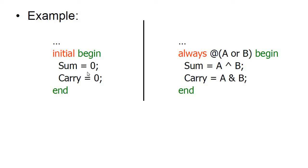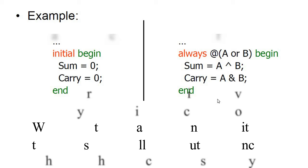As you can see in the example here, inside the initial statement, sum is equal to 0 and carry is equal to 0. This will execute once. Inside the always statement, we define it like this — this block is called the sensitivity list. When there is a change in the sensitivity list, the always block runs once. A XOR B will assign to sum and A AND B will assign to carry, and this works in a loop whenever there is a change in the sensitivity list.